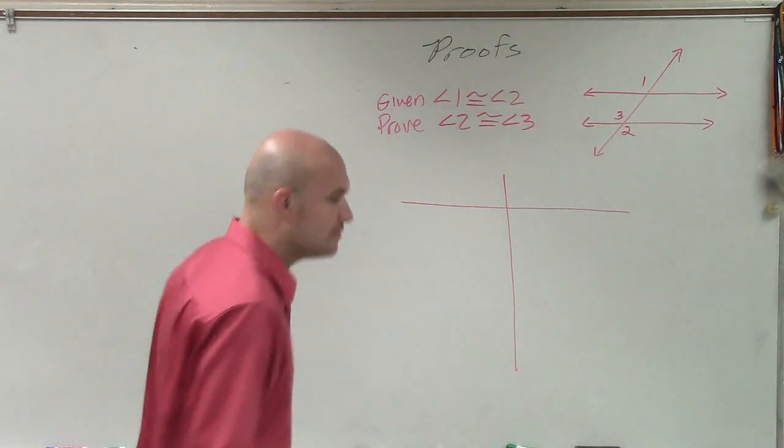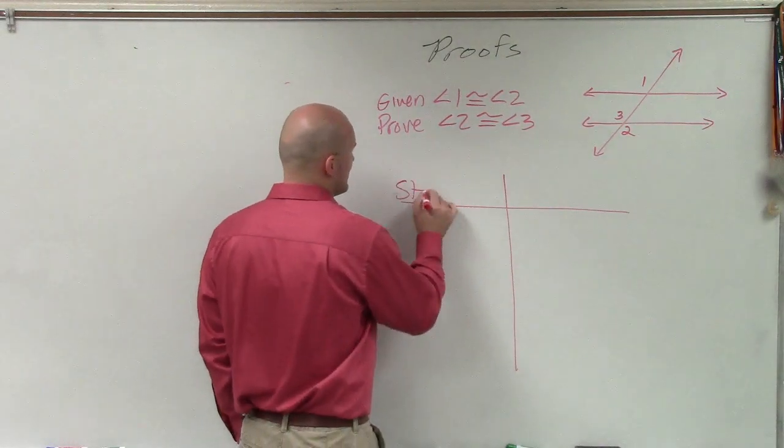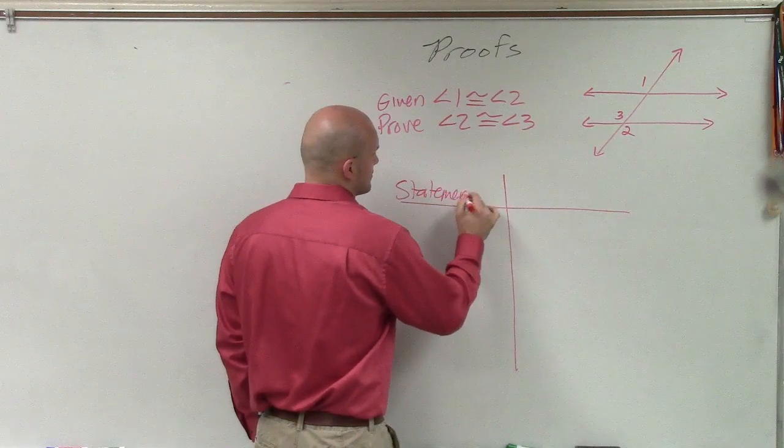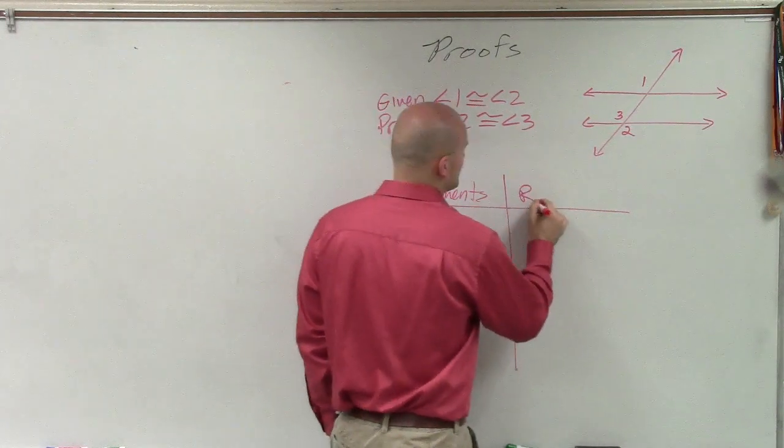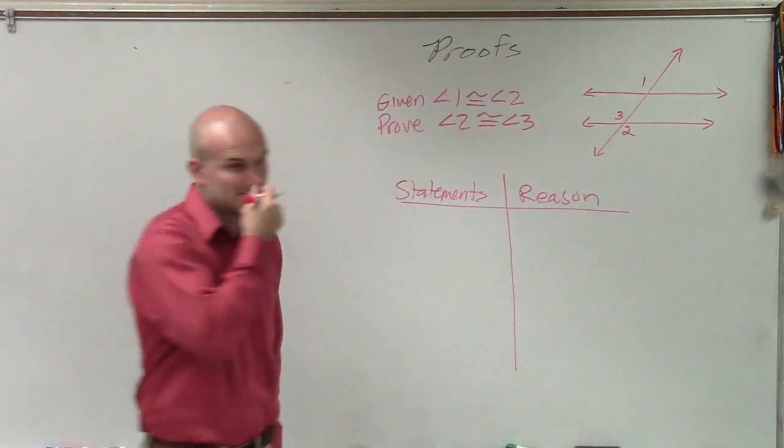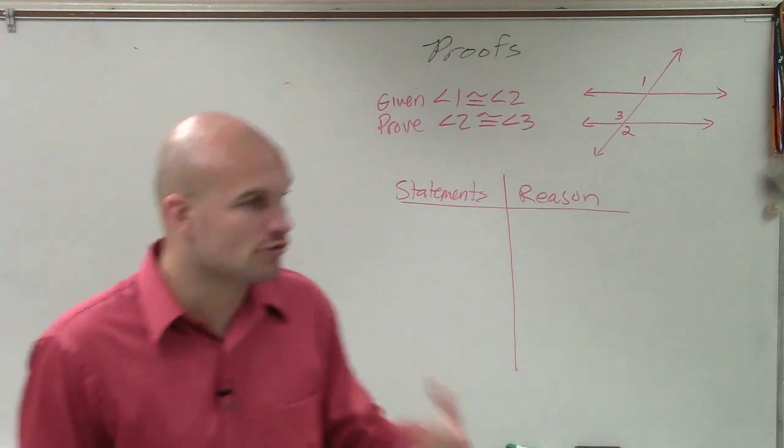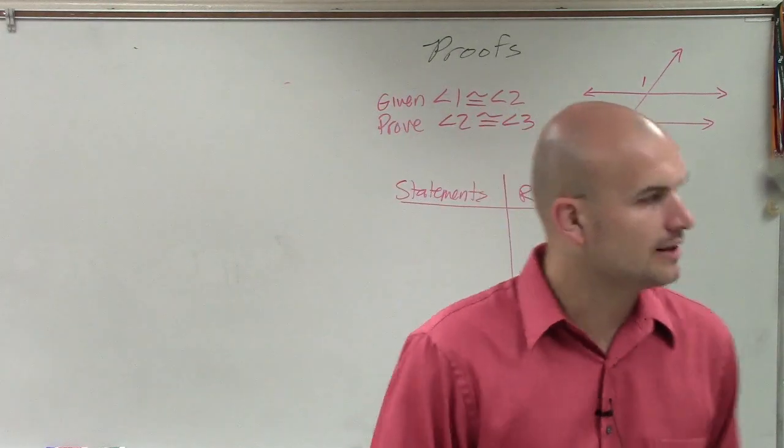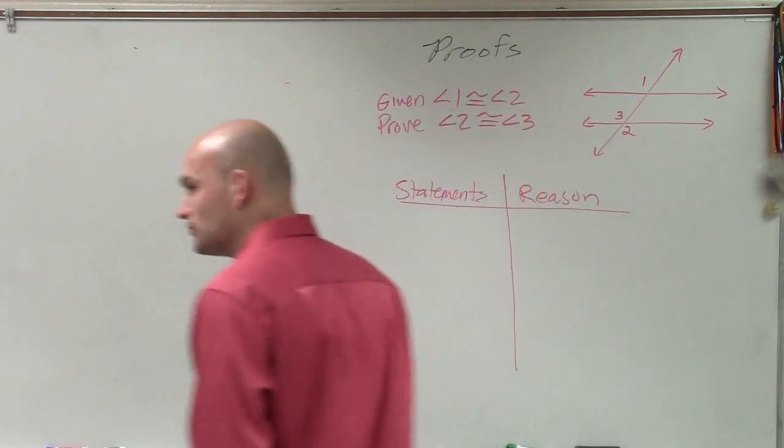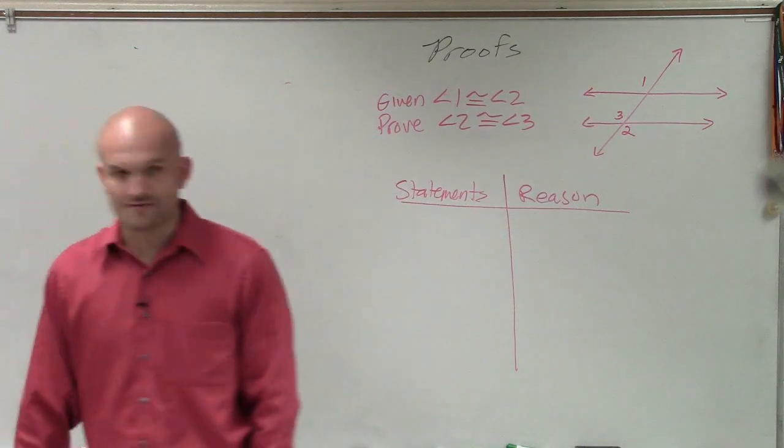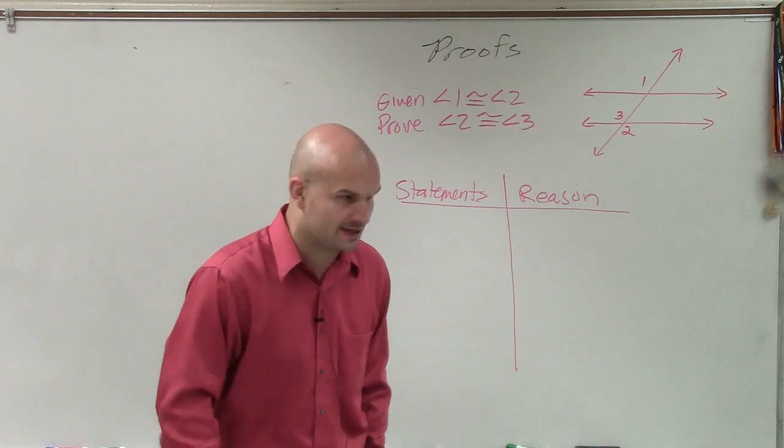And when we set up our two columns, we have statements, and then we have a reason. So now we're going to write a proof to prove that angle two is congruent to angle three. So now in this proof, we're going to start using some of our angle definitions that we've used. We're not always going to be algebraic.